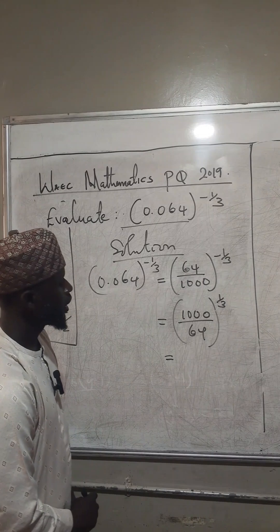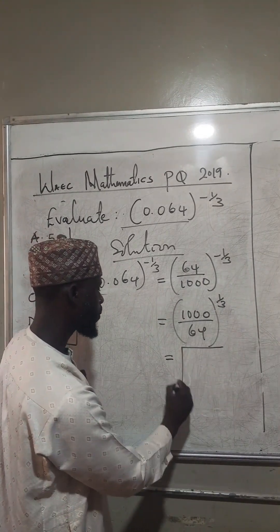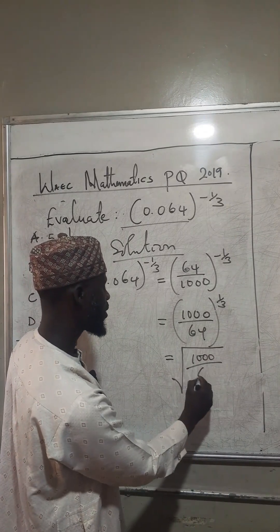So, now we take the cube root of this. So that's the meaning, the cube root of 1,000 over 64.